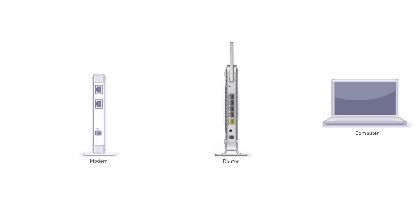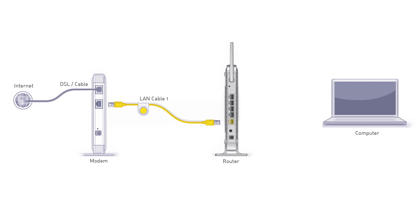Step 1: Connect your ISP network cable to the modem. This could be a DSL or a LAN input. Step 2: Connect the LAN cable to one of the output ports of the modem and input the same LAN cable to the Netgear router internet port. The whole connection looks exactly as shown on the console.